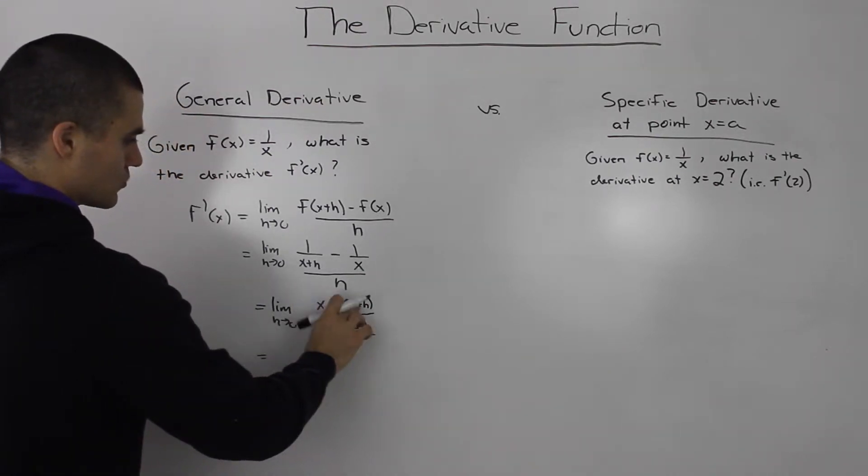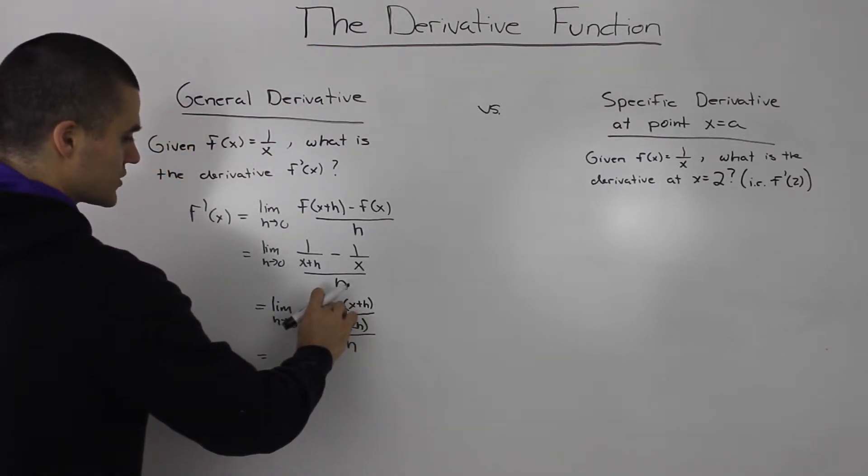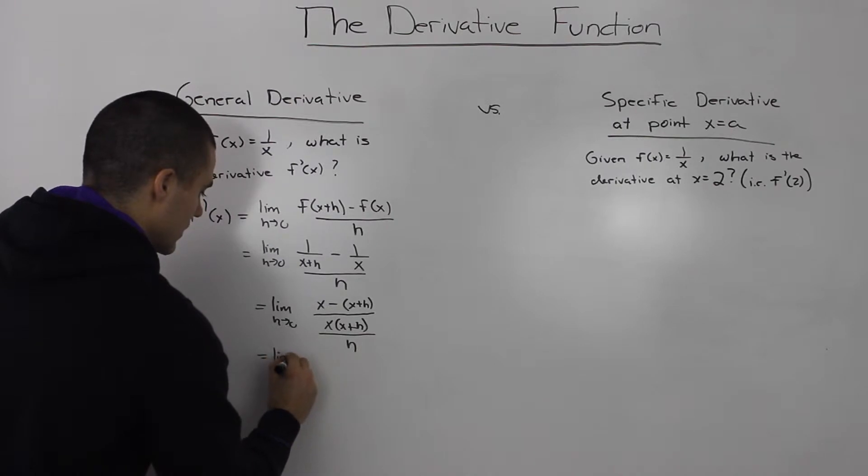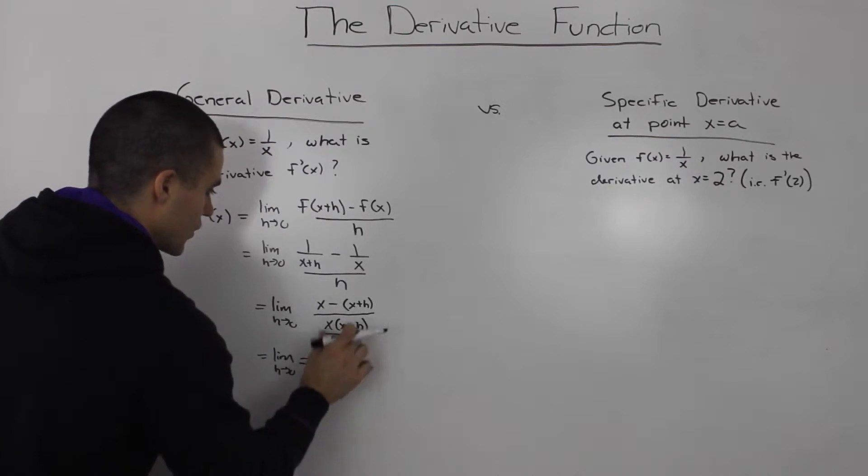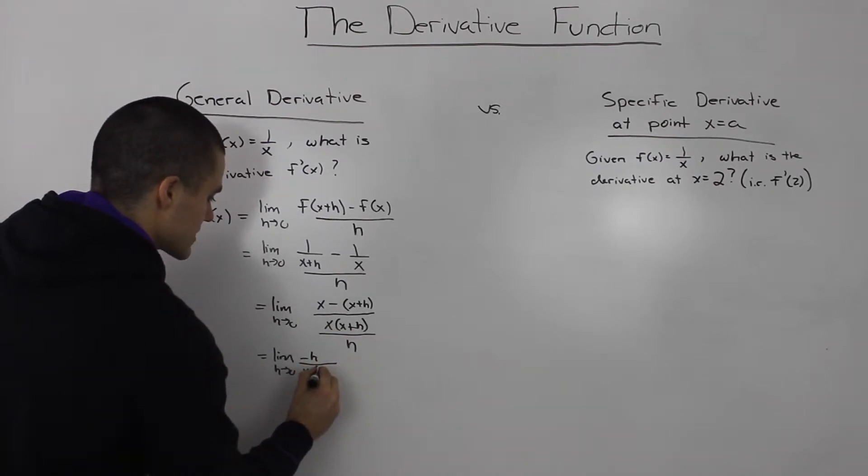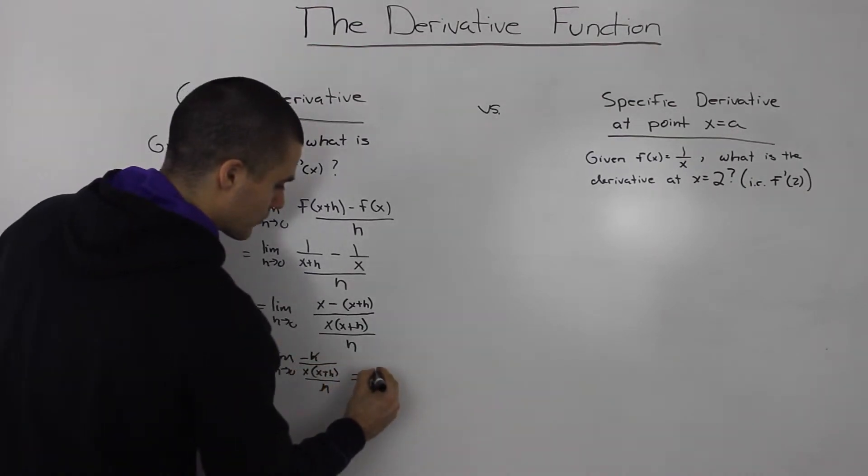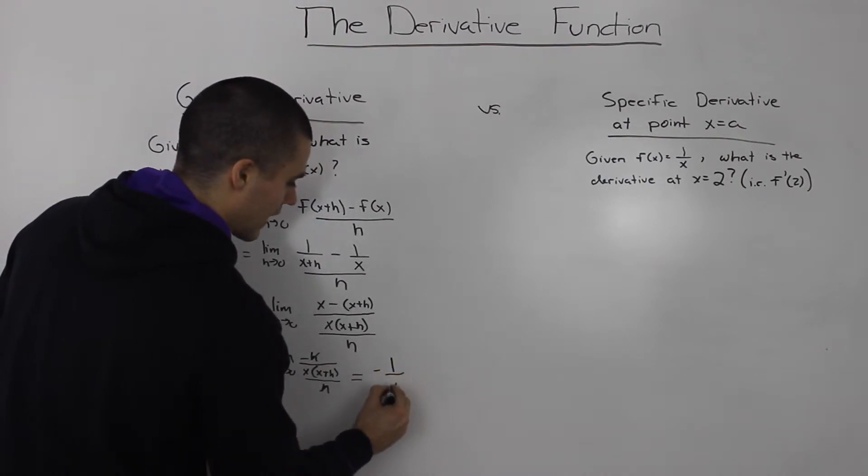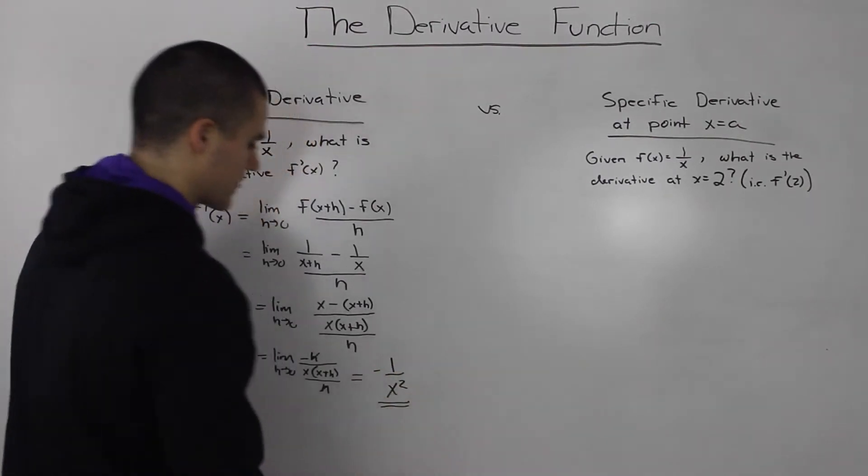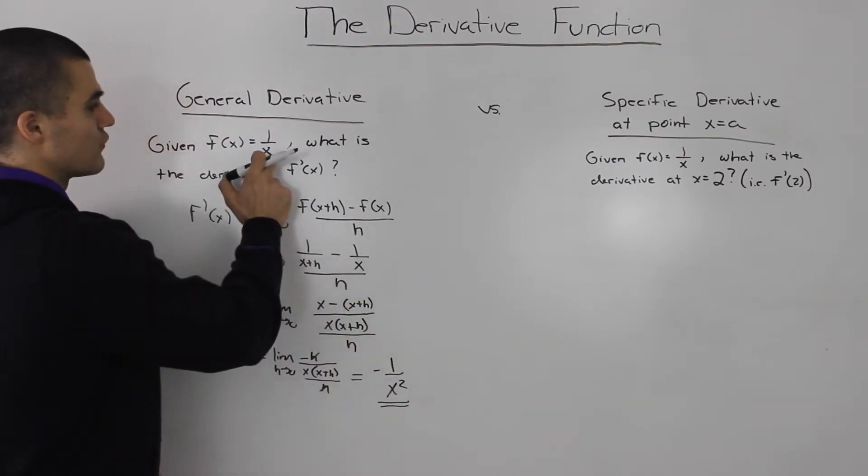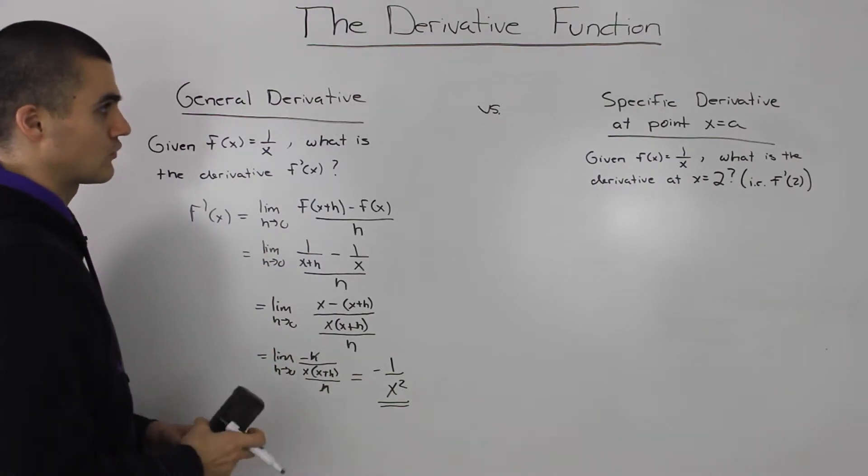And that will just equal—the x's in the numerator will cancel out and then you distribute the negative 1 in the front of the bracket to the h. So you'll get the limit as h goes to 0 of negative h over x times x plus h, all over h. The h's cancel out. And then when you plug in 0 for h, you'll end up with negative 1 over x squared. So this negative 1 over x squared is the derivative of 1 over x, or just the general derivative of 1 over x.